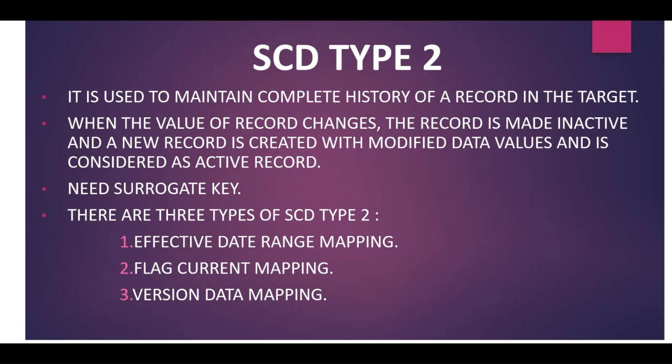Hello everyone, my name is Akshi and today we will see how to perform SCD Type 2 in Informatica Cloud. SCD Type 2 is used to maintain a complete history of records in the target. When the value of a record changes, the record is made inactive and a new record is created with the modified data values, considered as the active record. We need a surrogate key in SCD Type 2 — we use the primary key, but the surrogate key works on behalf of the primary key.